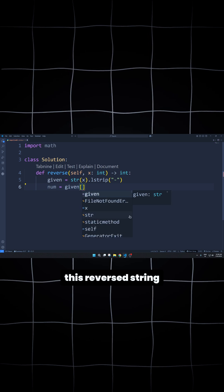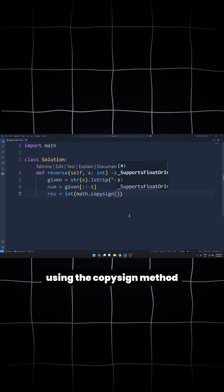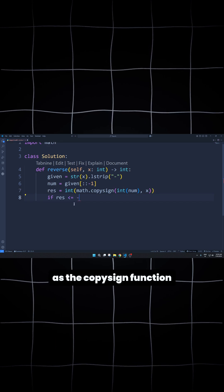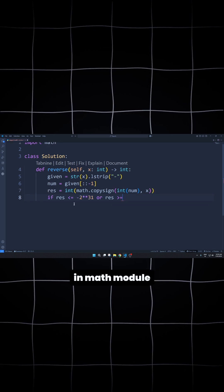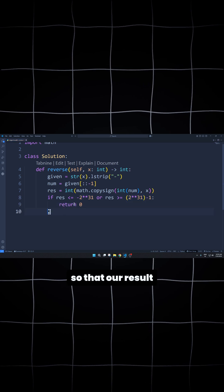Using slicing method, this reversed string is converted back into integer and gets its sign from the given integer using the copysign method from the math module. The result is also converted to integer as the copysign function in math module returns the answer in float data type. Finally, we put the condition so that our result satisfies our constraints and return it.